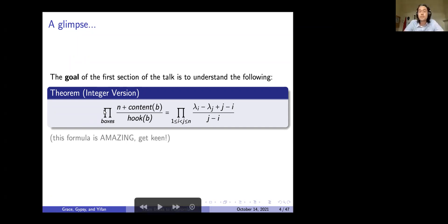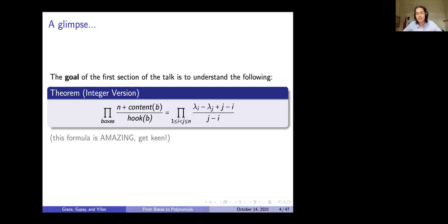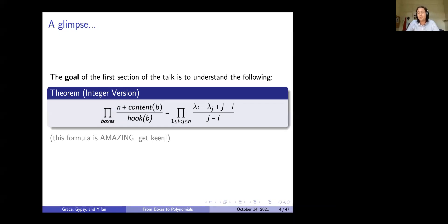There's the product over the boxes. We don't know what a box is yet, but the product of the content of the box divided by the hook of the box is equal to a product over an iterator: 1 ≤ i < j ≤ n over these symbols. The goal of the whole talk is so you can understand what this means.